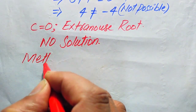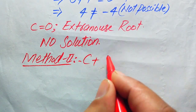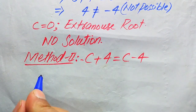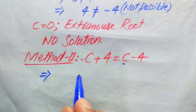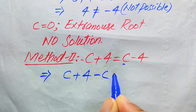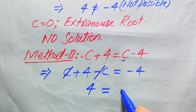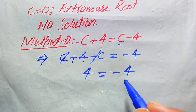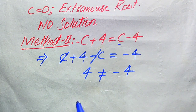Now solving with the second method. Starting from √(c + 4) = √(c − 4), we move c from the right side to the left: √(c + 4) − c = −4. Wait — more directly, rearranging gives 4 = −4, since the c terms cancel. Left side and right side are not equal, so we cannot find any value of c satisfying the equation. The second method directly implies this question has no solution.